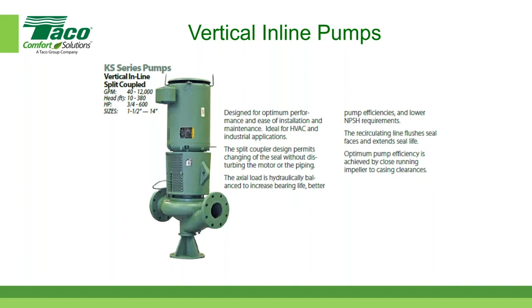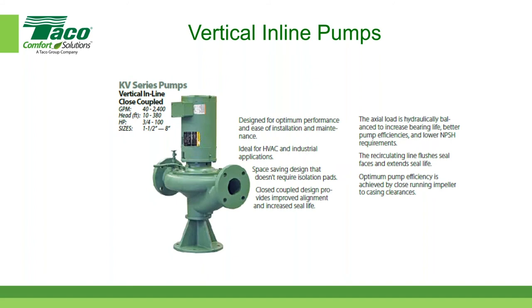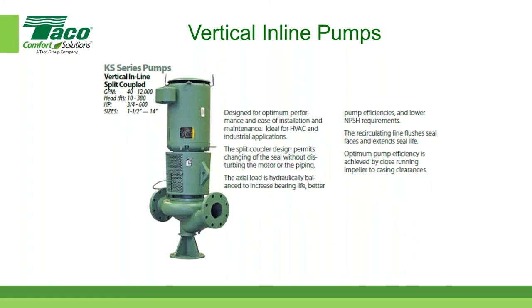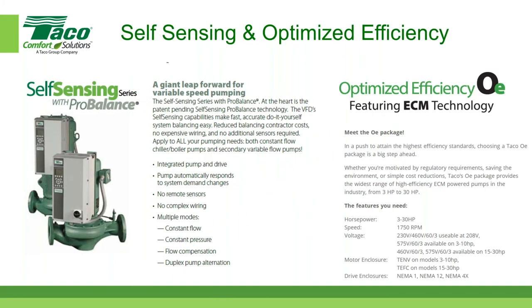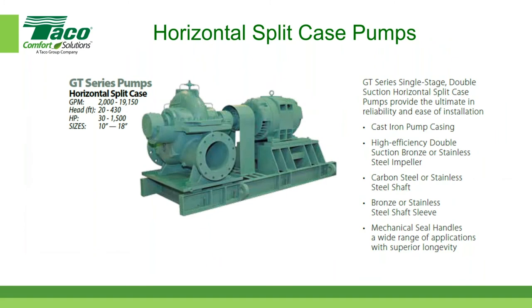Another popular vertical inline pump is the close-coupled pump, where the impeller is mounted directly on the motor shaft. A key difference with the KS model is that it allows you to remove a grill from the adapter and access the coupling inside, allowing you to service the seal without physically removing the electric motor. A lot of people like the KS model, especially at larger horsepower, because it's much more convenient for servicing. The next category is self-sensing pumps, which can be provided in both the vertical inline and the base-mounted end suction configurations.